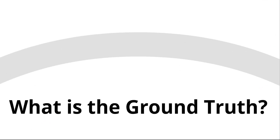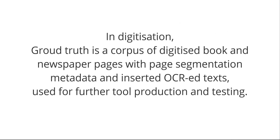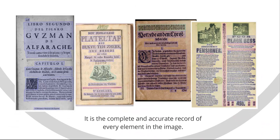What is Ground Truth, or short GT? It's an ideal result if you want to test what one method produces or what it should produce. In digitization, the Ground Truth is a corpus of digitized pages with page segmentation metadata and inserted OCR text. For example, on one digitized page, the metadata structure of the GT incorporates page segmentation, images and text. Accuracy of the text is checked on the character level.